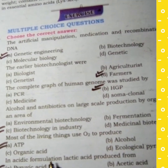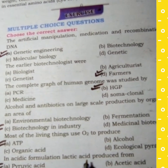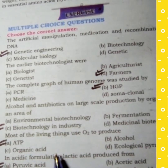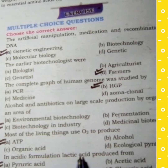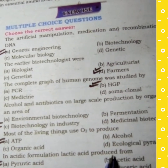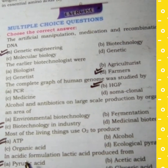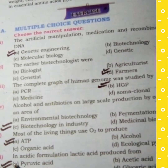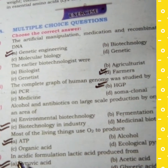MCQ number 6: The acid produced from lactic acid, which is produced by pyruvic acid — option B is the correct answer.